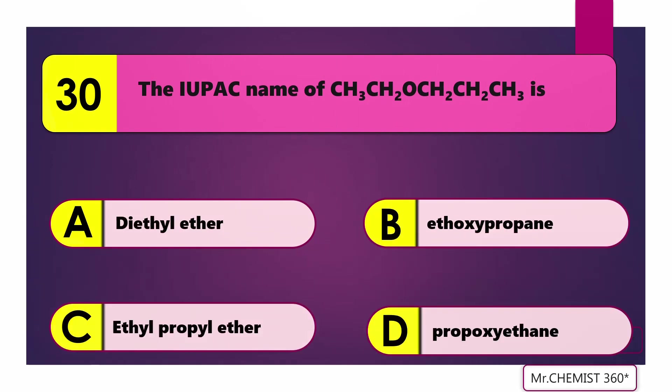Question 30: The name of CH₃CH₂OCH₂CH₂CH₂CH₃ is ethyl butyl ether (1-ethoxybutane).